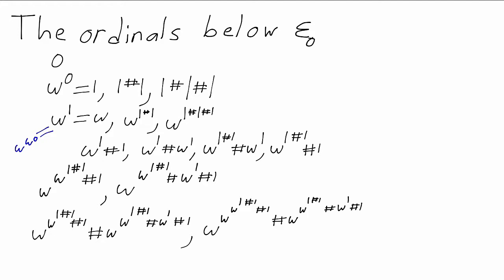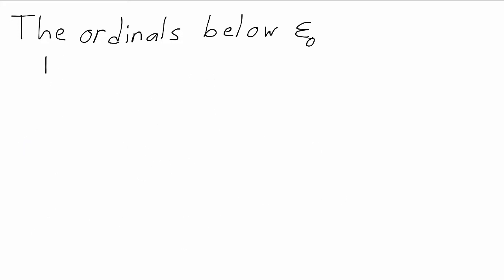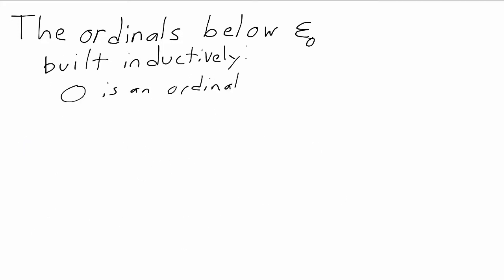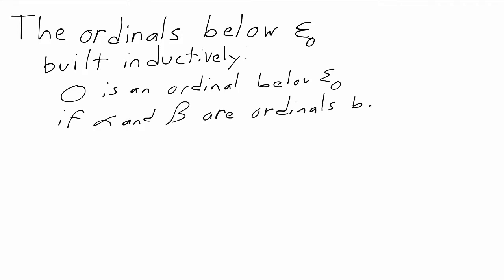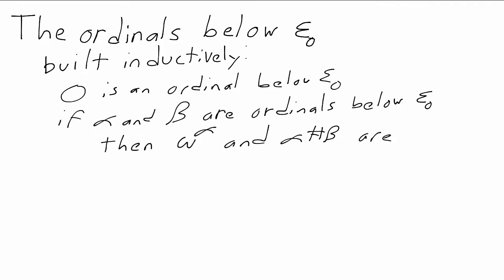And that's the complete list of ordinals below epsilon zero. They're built inductively by starting with zero and then taking ordinals alpha and beta that we've already found and forming the ordinals omega to the alpha and alpha plus beta.